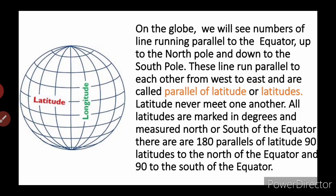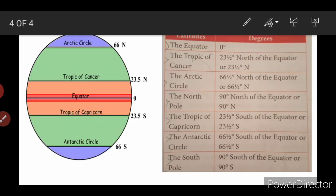All latitudes are marked in degrees and measured north or south of the equator. There are 180 parallels of latitude — 90 latitudes to the north of the equator and 90 to the south of the equator. Here in this figure, you can also understand the latitudes and longitudes.